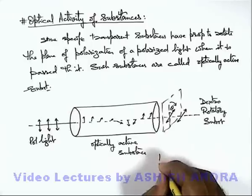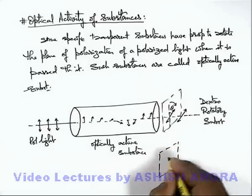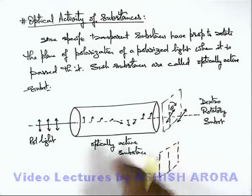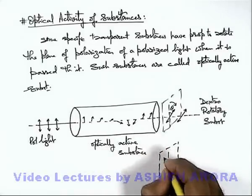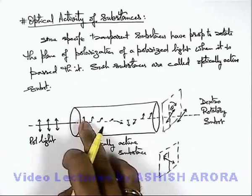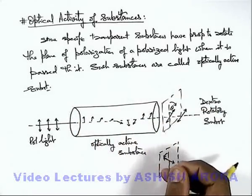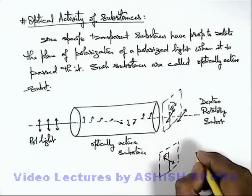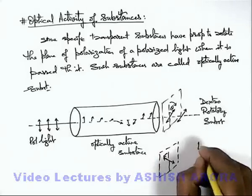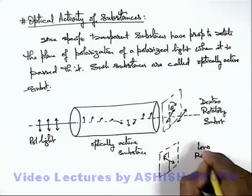And if finally the light plane which is coming out of the substance is rotated in an anti-clockwise manner — if here it is rotating clockwise and it comes out in anti-clockwise rotation — then such substances we call levo-rotatory substances.